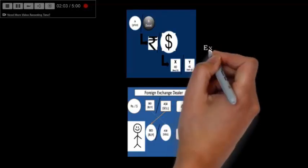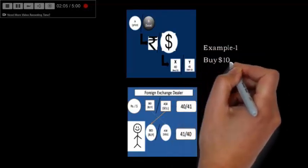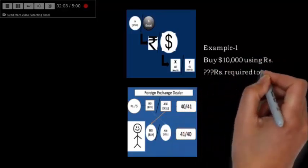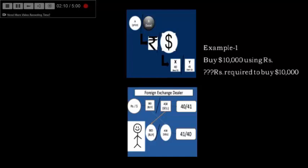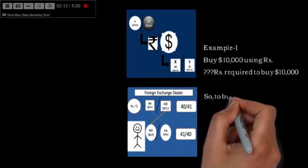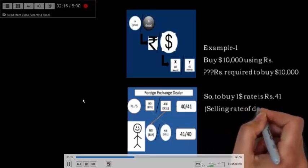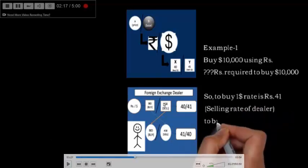Example 1: buy dollar 10,000 using rupees. So like rupees, we require to buy dollar 10,000. To buy 1 dollar, the buying rate is 41. So to buy 10,000 we simply need 10,000 into rupees 41 equals 410,000 rupees.